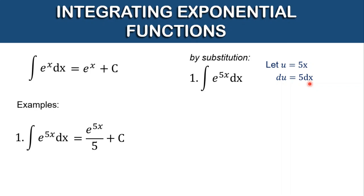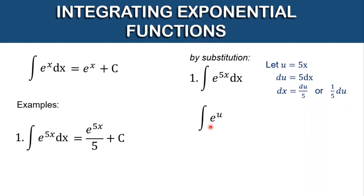After this, we find the value of dx. To find dx, we divide both sides by 5 to cancel it out beside dx. So dx is equal to du over 5 or one-fifth du. Having these three values, we substitute into our equation. We have the antiderivative of e raised to u — where u is 5x — times dx, and the value of dx is one-fifth du.